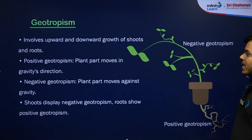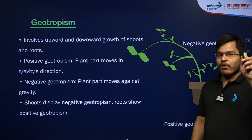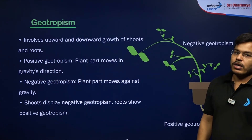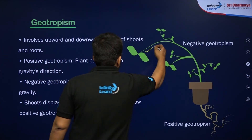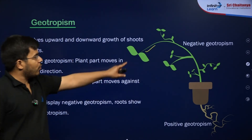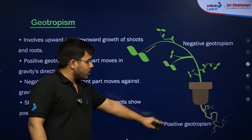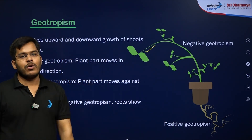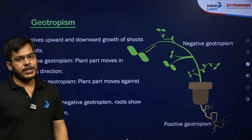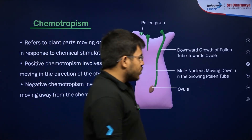Next is geotropism — the movement of plant parts towards or away from the ground or gravity. The stem is negatively geotropic, meaning it moves away from the ground and away from gravity. The roots are positively geotropic, meaning roots move towards the ground or towards gravity.